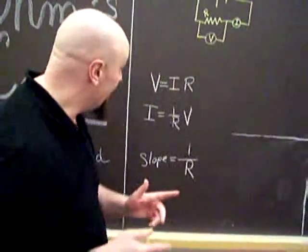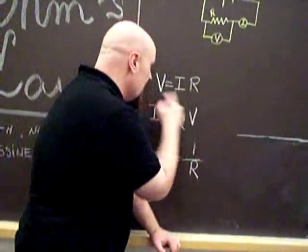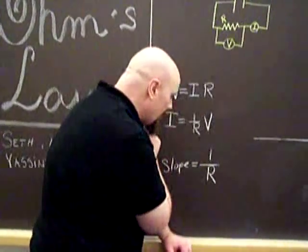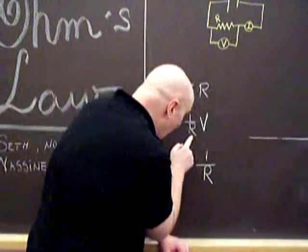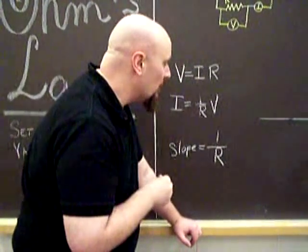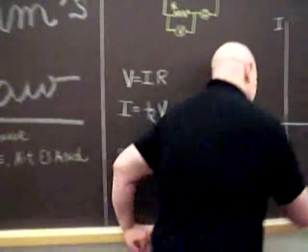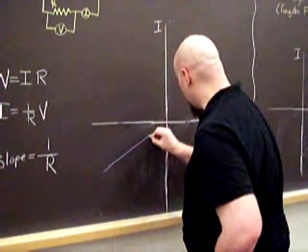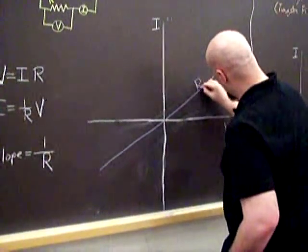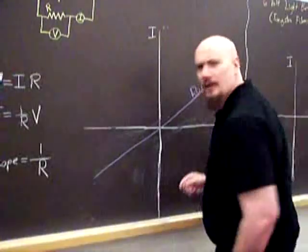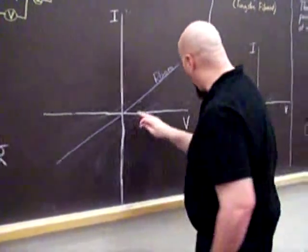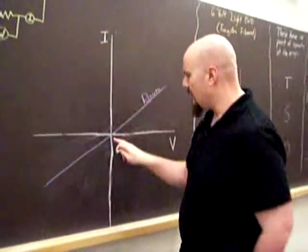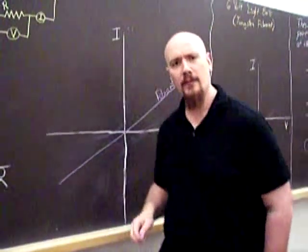So if the resistance doesn't change, this means that we have a linear equation. So if we plot I versus V, the slope should be the reciprocal of the resistance. So this is what we should get for the room temperature. For the room temperature, we should get a line with the positive voltages corresponding to the positive currents, and then negative voltages would correspond to negative currents.